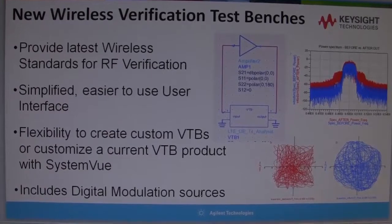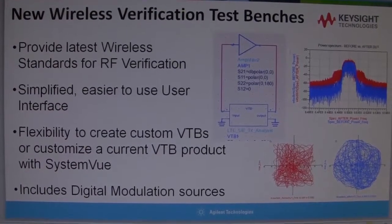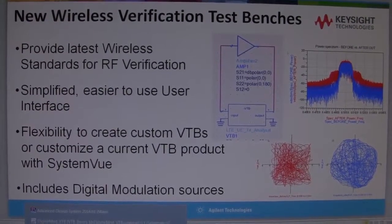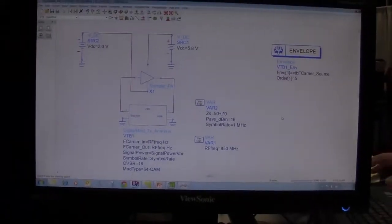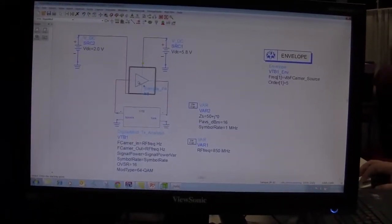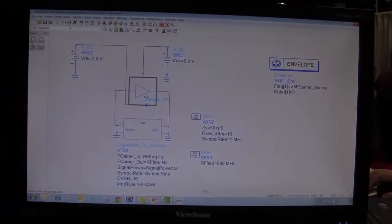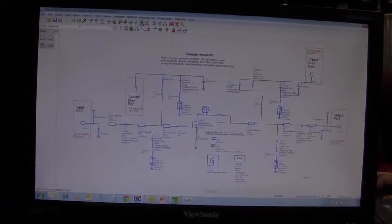It includes all the digital modulation sources, as you can see. Let me show you how it is in ADS. In this schematic here, this is an amplifier or device under test, DUT.